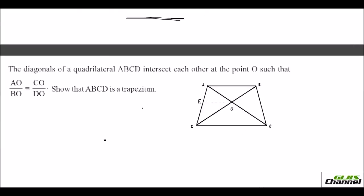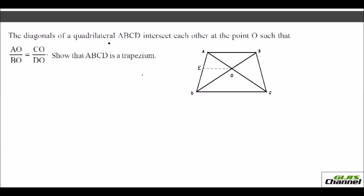Let us move on to the third question. The diagonals of a quadrilateral ABCD intersect at point O such that AO over BO equals CO over DO. You need to show that this quadrilateral is a trapezium. A quadrilateral could be a square, rectangle, rhombus, parallelogram, or trapezium — all have four sides.